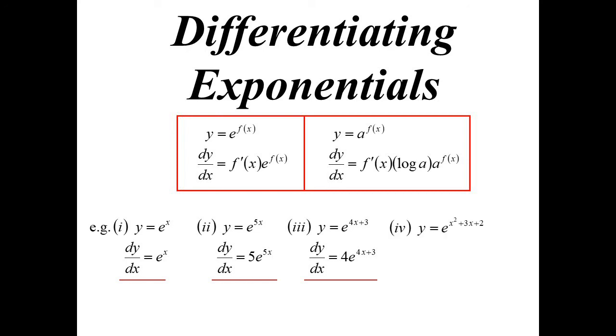We could have a quadratic there. So e to the x squared plus 3x plus 2 becomes 2x plus 3 times e to the x squared plus 3x plus 2. Ah, going to have to use a product rule here now, because I've got a function of x, 3x squared, times another function of x, e to the 4x. So write down the first, 3x squared. Diff the second, 4e to the 4x.